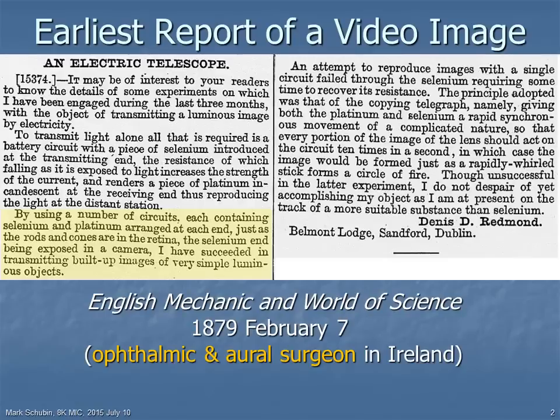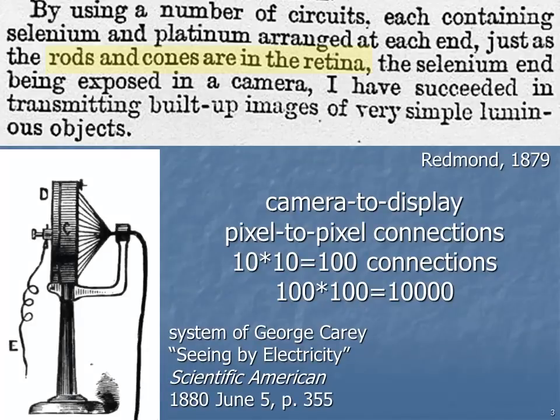This is the earliest known published report of an actual video image. It appeared in 1879. The author and inventor was an ophthalmic and oral surgeon named Dennis Daniel Redmond, who both practiced surgery and did his inventing in Dublin, Ireland. Here's an enlargement of part of the report. Redmond compared the pixels of his system to the rods and cones in the retina, and as far as there being individual photosites, that's an accurate comparison.